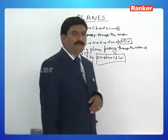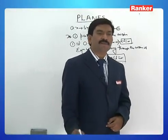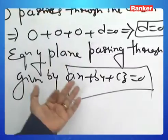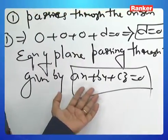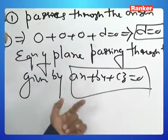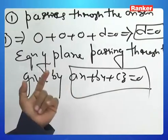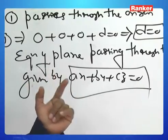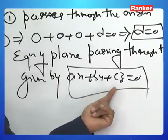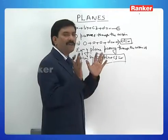Therefore, the equation of a plane passing through the origin is AX + BY + CZ = 0. This is a first-degree equation in X, Y, Z with no constant term — any such equation without a constant passes through the origin.